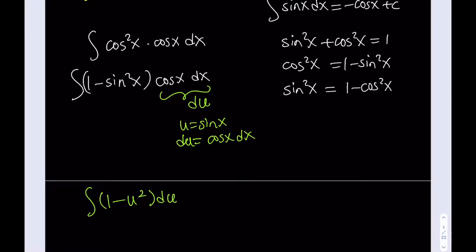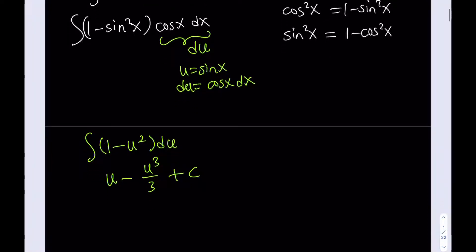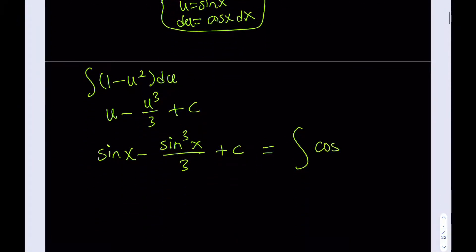Now let's do the replacements. This gives us the integral of 1 minus u squared du, which is a polynomial and super easy to integrate. You increase the power and divide by that power, so we get u minus u cubed over 3 plus c. Now back-substituting u equals sine x, we get sine x minus sine cubed of x divided by 3 plus c. That is the integral of cosine cubed x. If you differentiate that expression, you'll get cosine cubed of x after some simplifications.